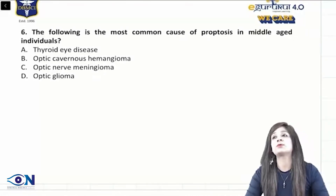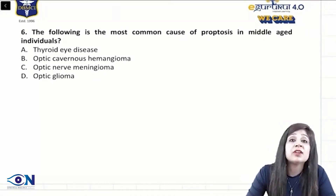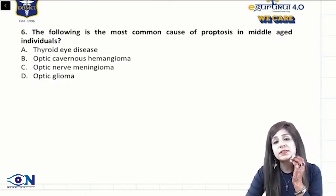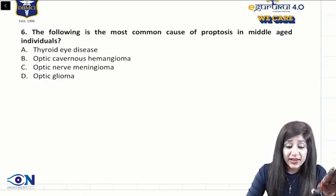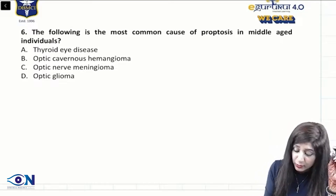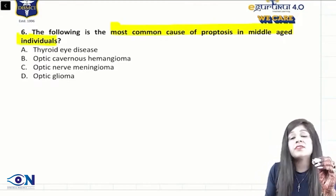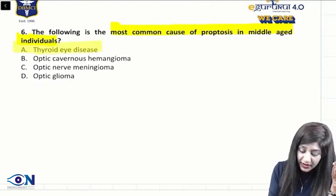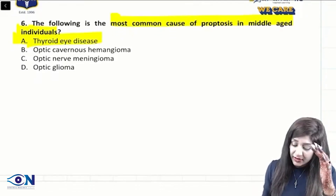Another question related to proptosis. Proptosis has been significant in exams — in 2020 May there were three questions on proptosis at a stretch. The most common cause of proptosis in middle age: whenever we are talking about adults, it is always thyroid eye disease.